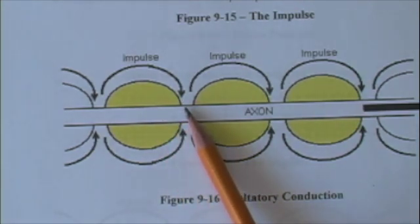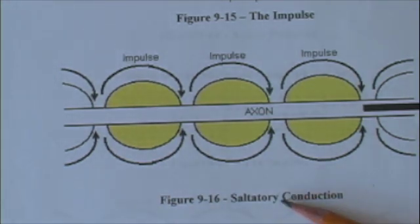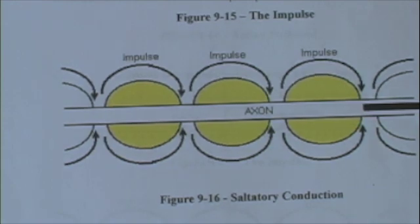This is called saltatory conduction, jumping conduction. And it's a very rapid way of conducting a nerve impulse. That's the way mammal neurons conduct impulses rapidly.